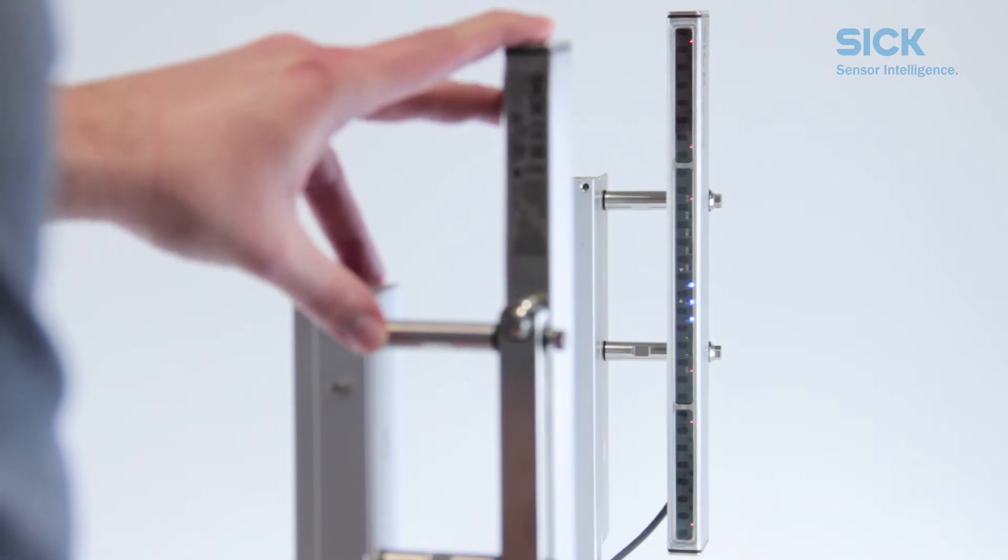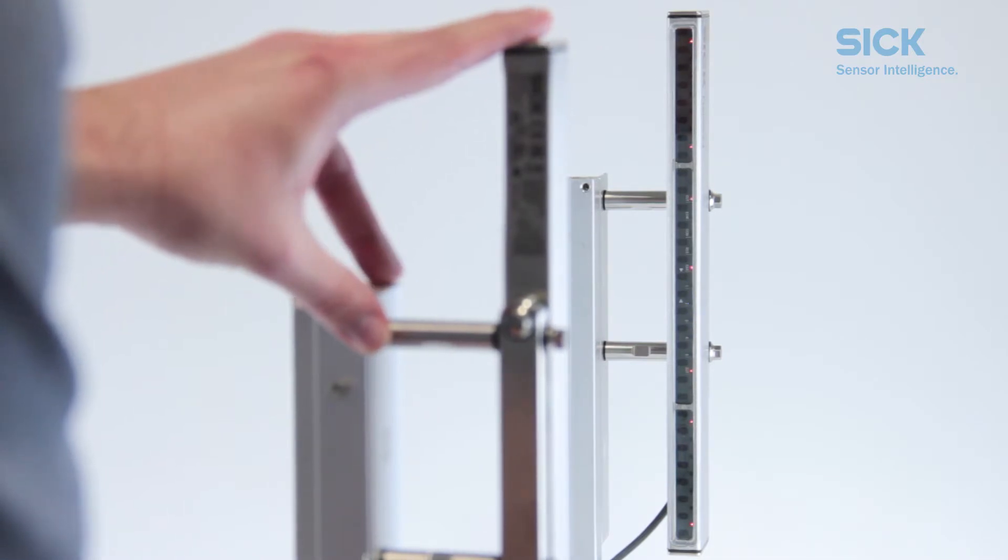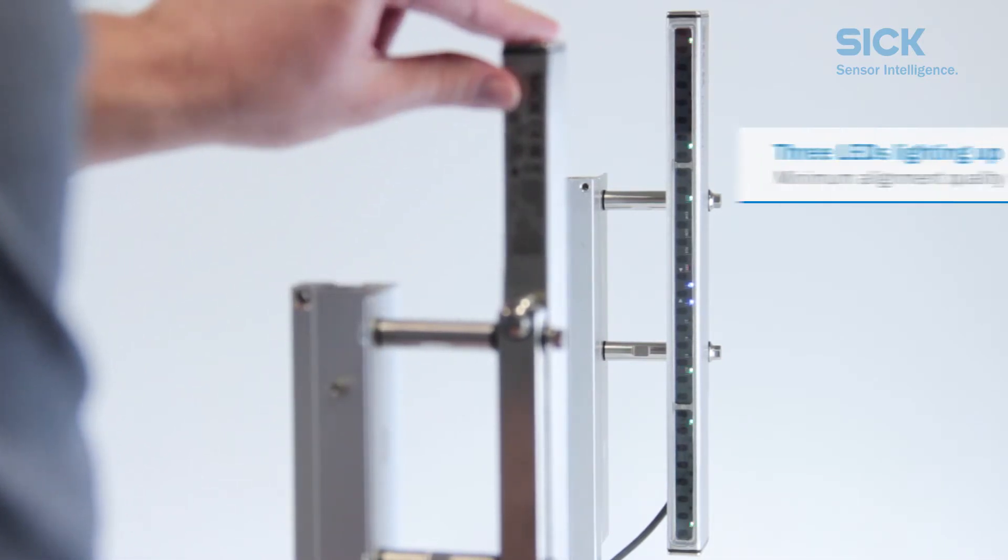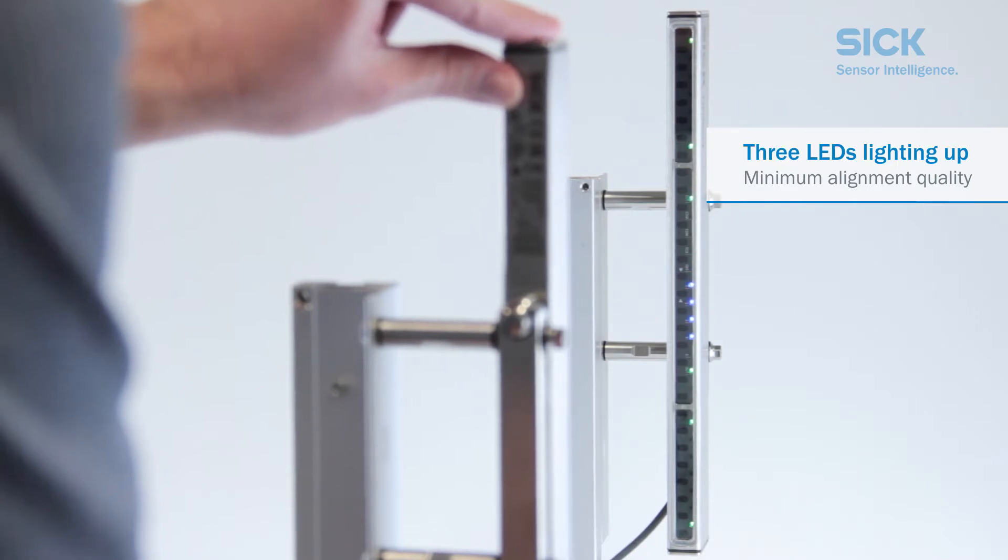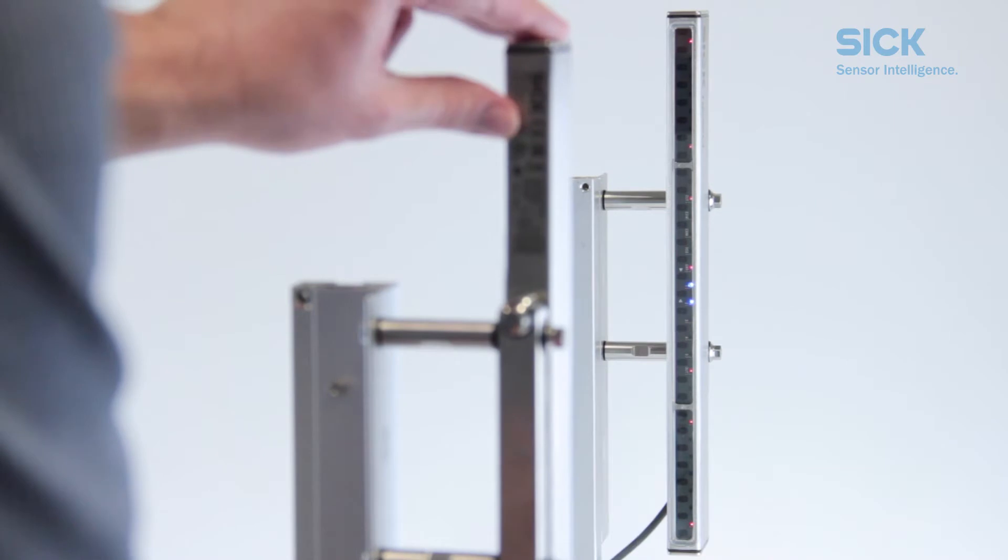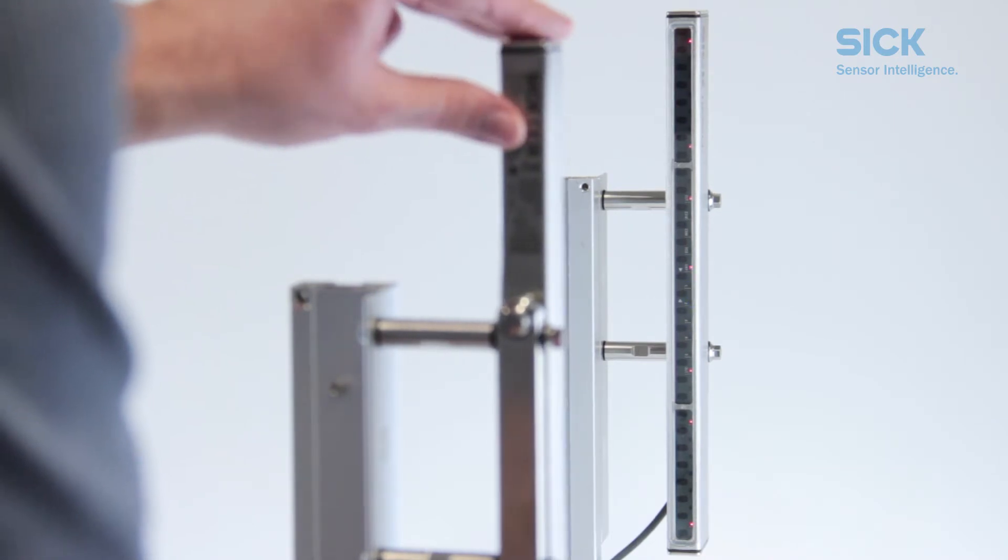Proceed with the alignment so that more LEDs light up blue. You will know that the alignment quality is good enough when at least three LEDs have lit up blue. If this is the case, you will also notice that the safety light curtain switches to green.